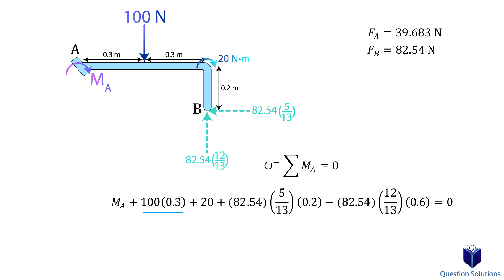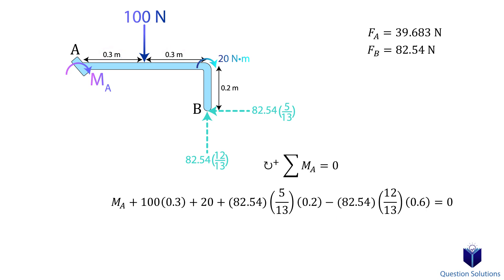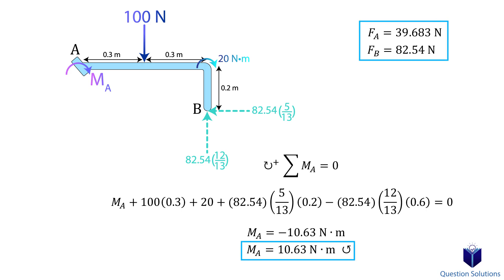Next, we have the 100 N force with a perpendicular distance of 0.3 meters. After that, we have the 20 Nm moment applied at the bend — it's a clockwise moment, so it's positive. Finally, we have the x and y components of the force at B. For the x-component, the perpendicular distance is 0.2 meters, and for the y-component, it's 0.6 meters. The x-component creates a clockwise moment, and the y-component creates a counter-clockwise moment. Solving gives us the moment at A, but notice that it's a negative value — meaning the moment is actually counter-clockwise.